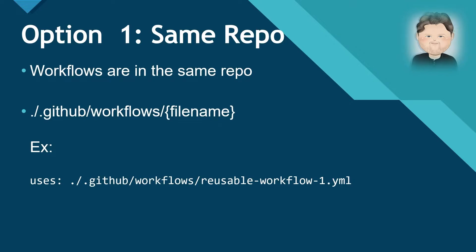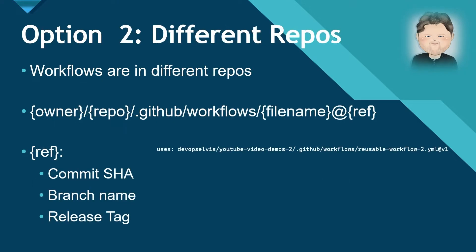Instead, GitHub Actions is going to use the reusable workflow file from the same commit as the calling workflow. The second option is if the calling workflow and the reusable workflow are in different repositories. In this instance, you reference the reusable workflow as owner slash repo slash dot github slash workflows slash file name at a reference. You are still pathing down to the reusable workflow, but now you are needing to provide a reference so that GitHub Actions knows exactly what version of the workflow to use.